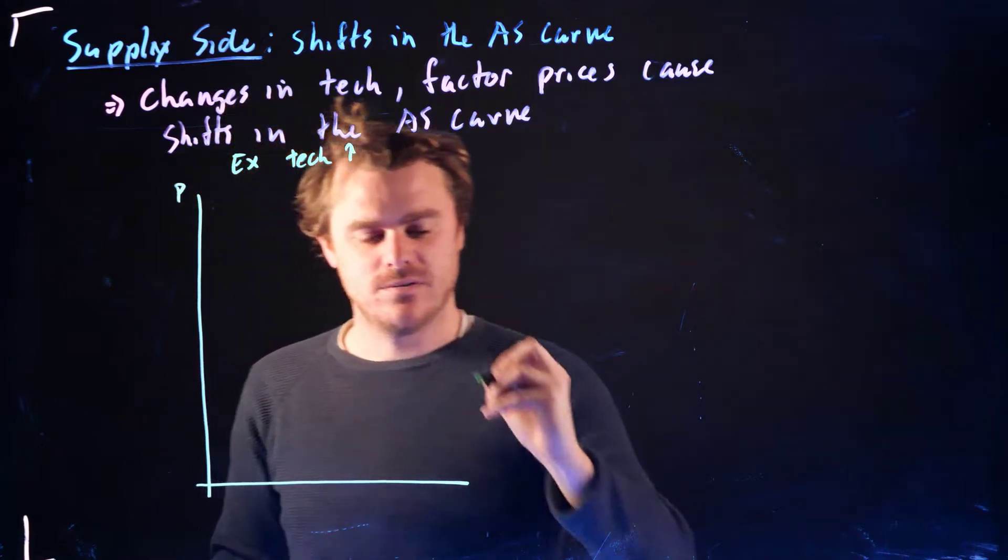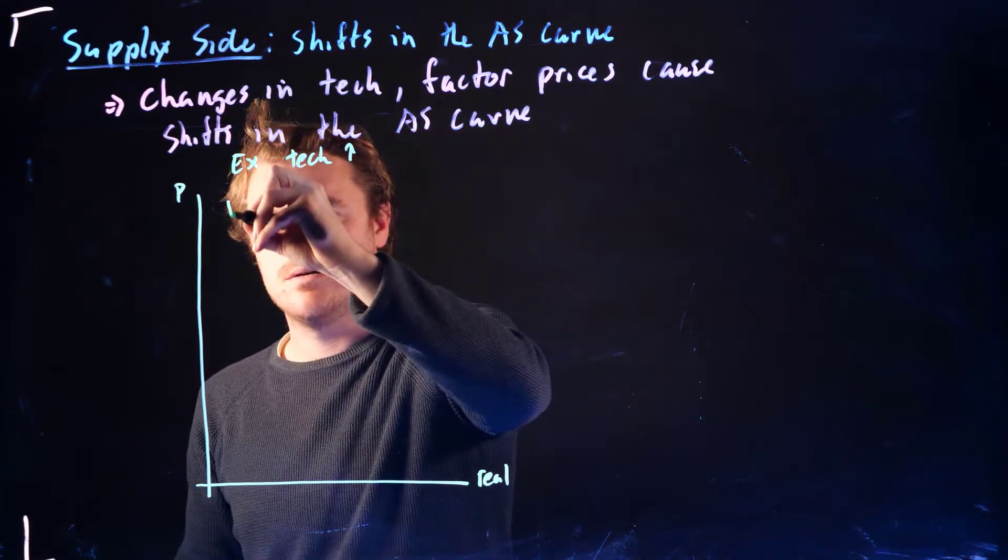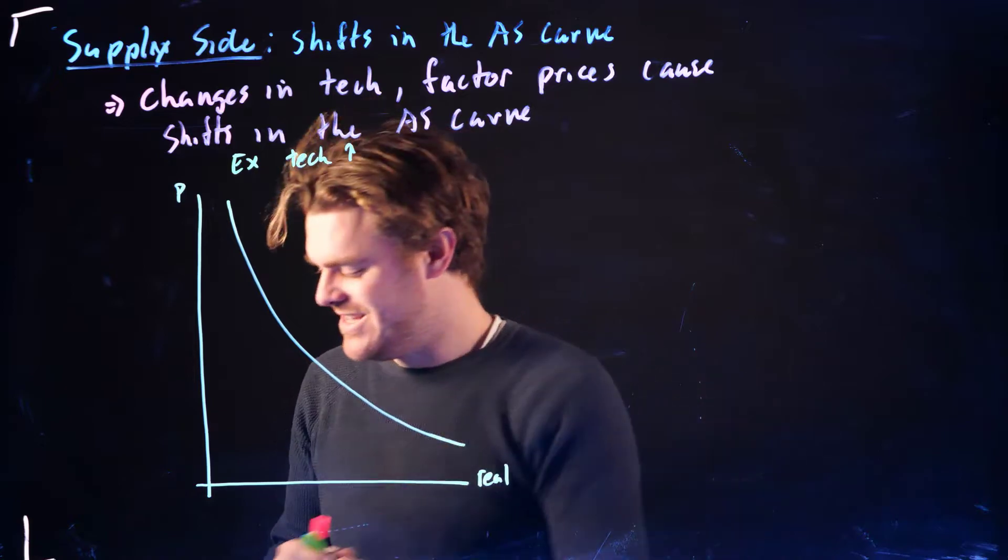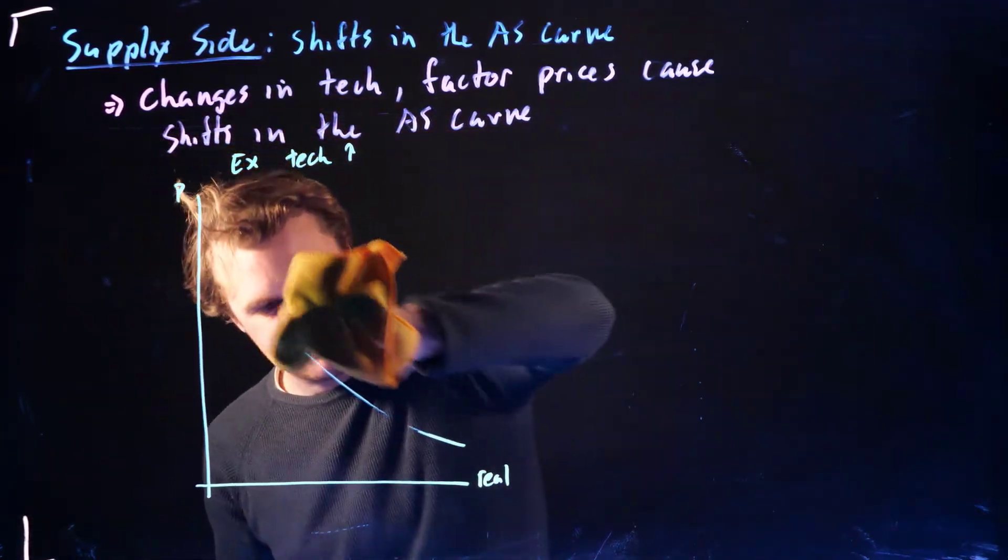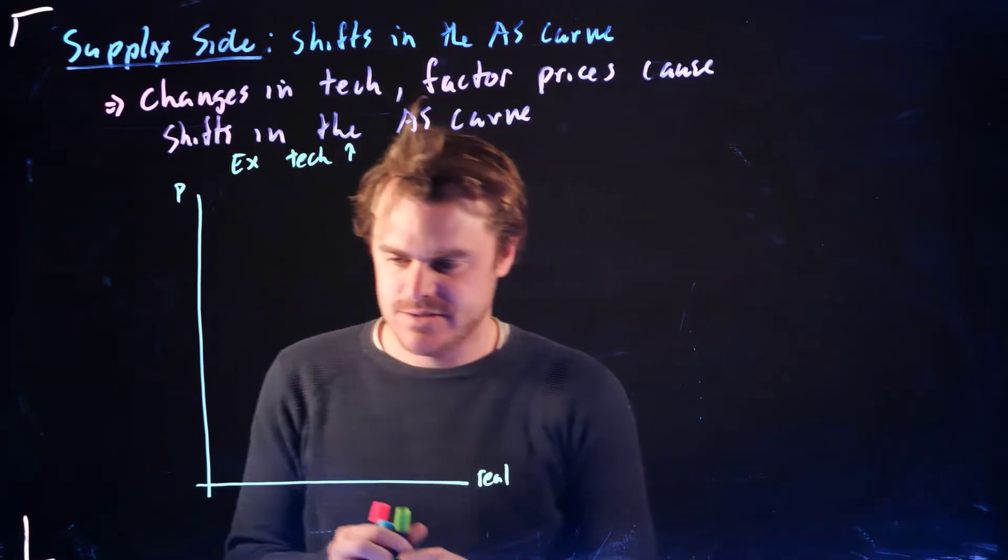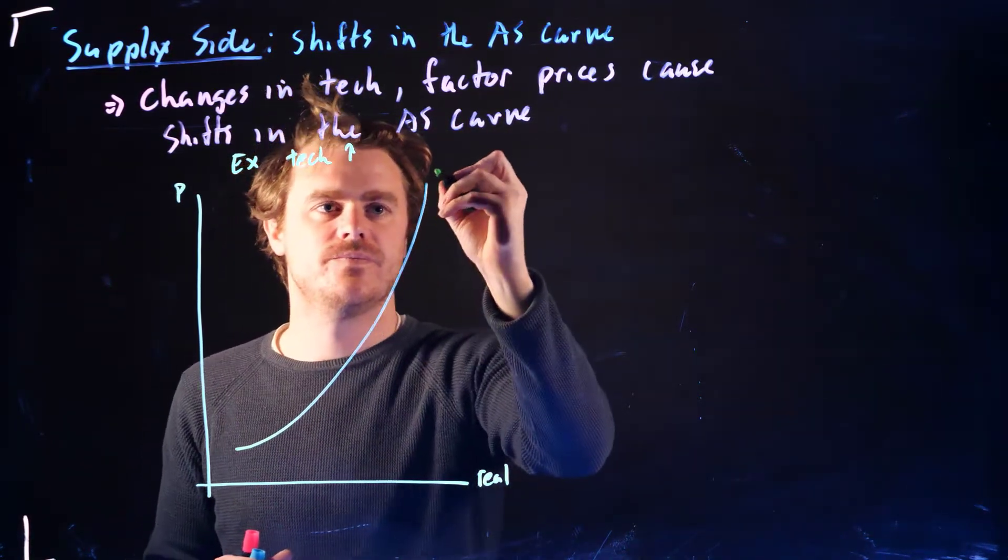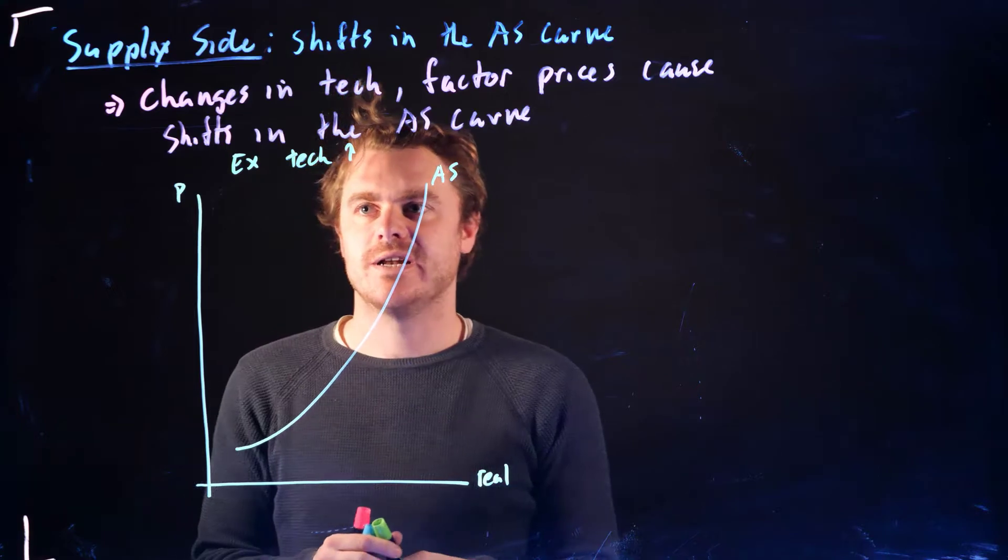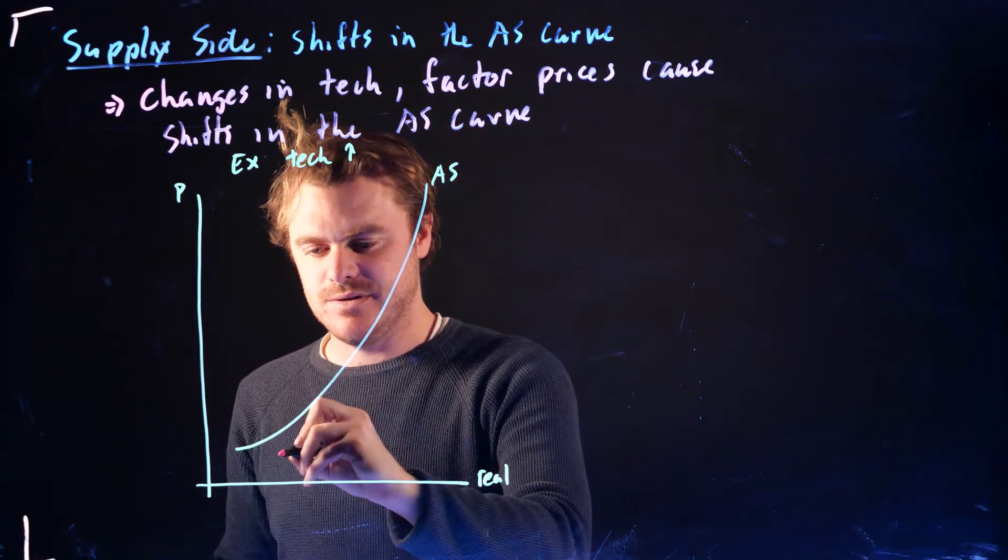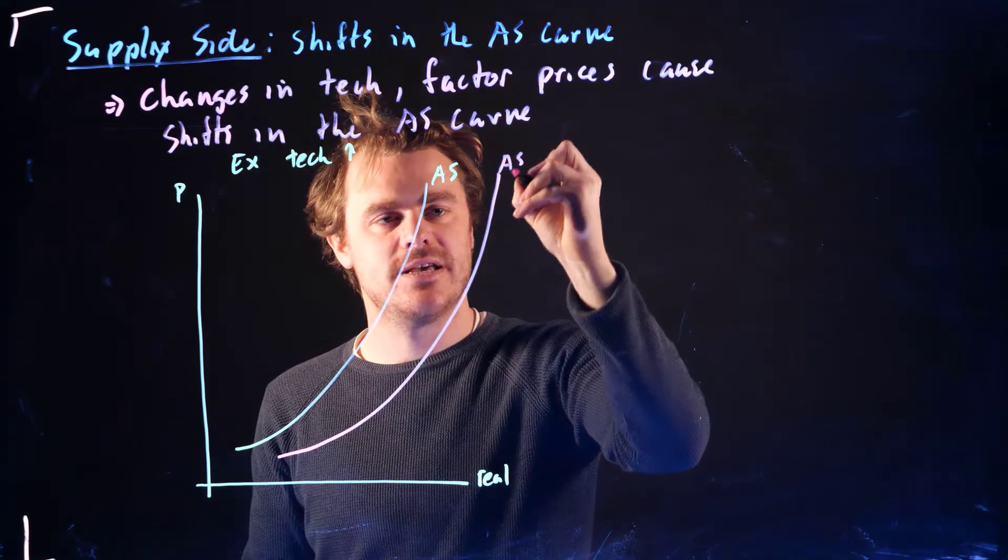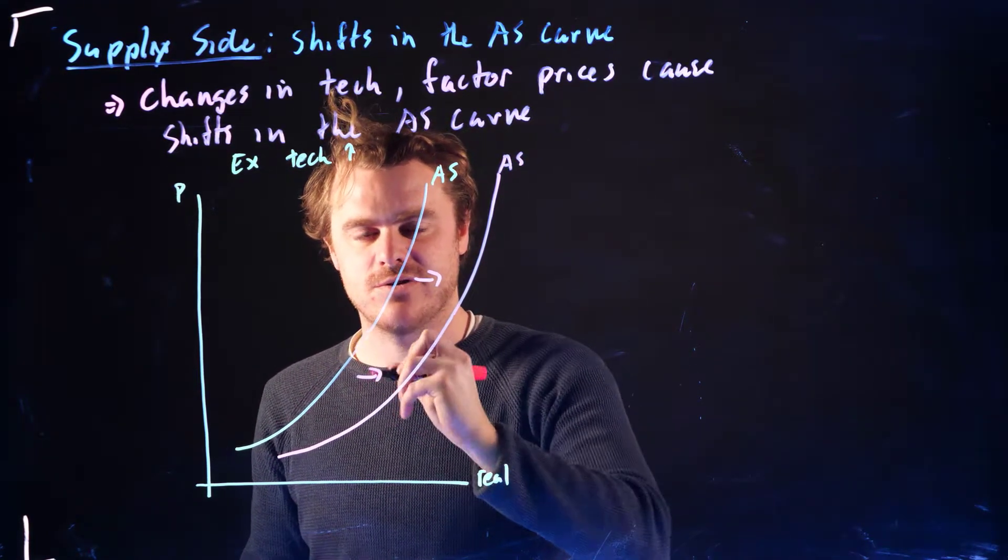Price level, price level, real Y. Here's our AD curve, but we want to draw an AS curve. So here's our AS curve. And what's going to happen if technology improves for the same price level, firms are willing to supply more. So here this AS curve is shifting to the right.